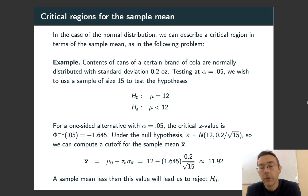So with the one-sided alternative and α = 0.05, we get a critical z-value of -1.645. So if we get an x̄ more than 1.645 standard deviations below the mean, we should reject the null hypothesis.